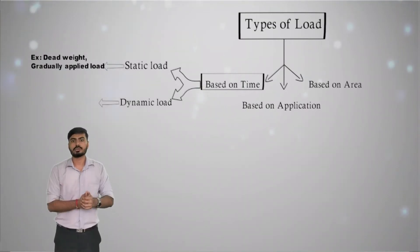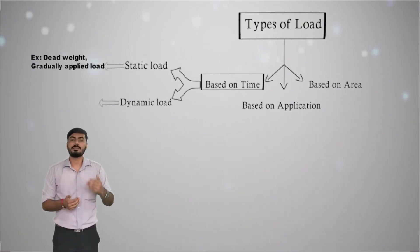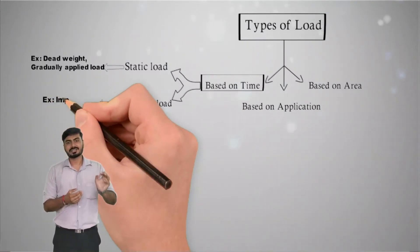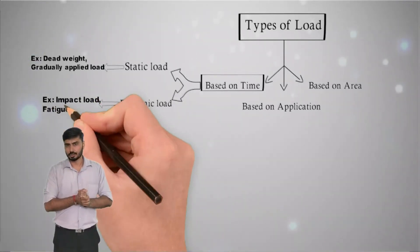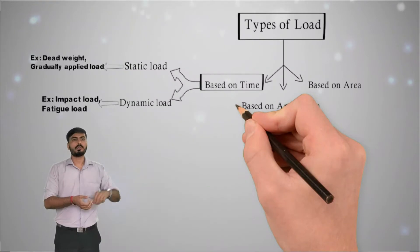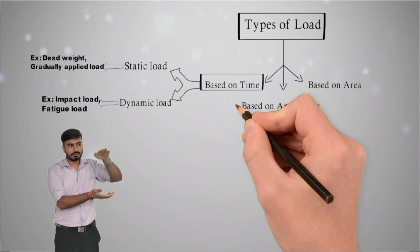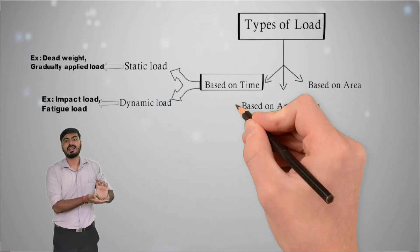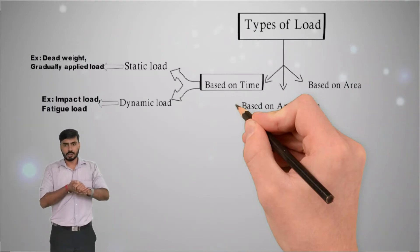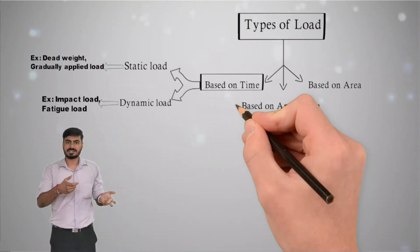If the direction changes — say, from horizontal right to horizontal left over one hour — or if the magnitude changes, that type of load is called a dynamic load. A best example under dynamic load is impact load. An impact load is any load applied from some height: when an object is released from a height and falls freely onto a surface, the resulting load on that surface is called impact loading, which falls under dynamic load.